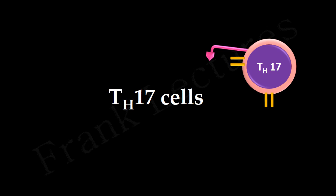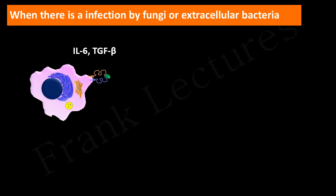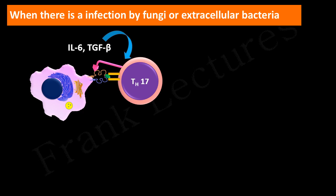The designation 1 and 2 in T helper type 1 and T helper type 2 cells were assigned because these were the first CD4 positive T cell subsets to be distinguished. T helper 17 cells are so named because the signature cytokine they produce is interleukin-17. Besides interleukin-17 they also produce interleukin-22. When there is an infection by fungi or by extracellular bacteria, interleukin-6 and transforming growth factor beta are produced by cells of innate immunity, and these cytokines induce the naive T cell to differentiate into a T helper 17 cell.